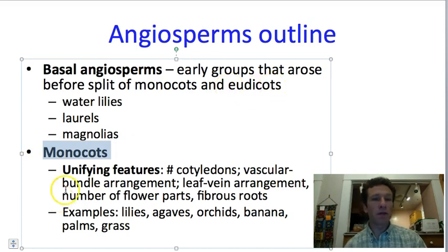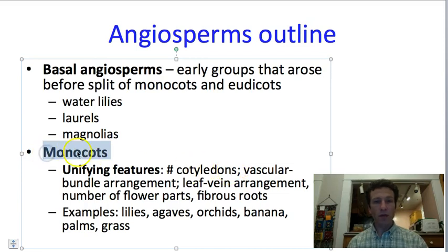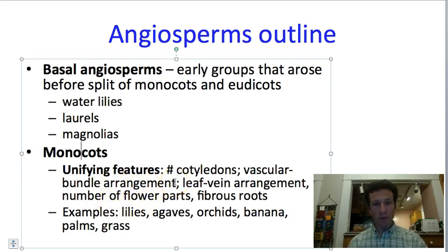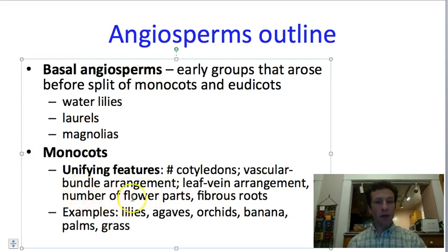We'll talk about several unifying features that most monocots have, including their number of cotyledons. As a clue, mono means one, so the monocots will have one cotyledon. We'll talk about their vascular bundle arrangement, which is scattered. We'll talk about their leaf vein arrangement — monocots often have parallel leaf veins. We'll talk about their number of flower parts, which come in groups of three, and the fact that monocots typically have a fibrous root structure.